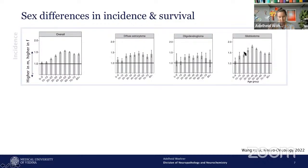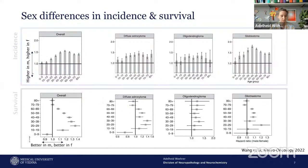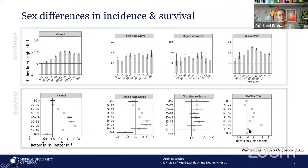All subtypes tend to be more common in male patients compared to females, most pronounced in glioblastoma, and this disparity starts from middle age. Not only are gliomas more common in males, but males also perform worse — we see better survival in female patients across the middle age range. The pattern is very similar in astrocytoma and glioblastoma.